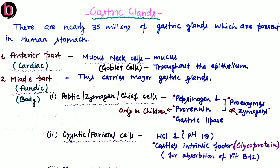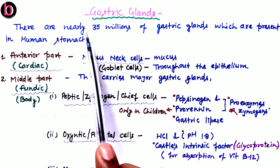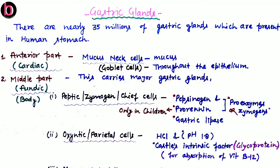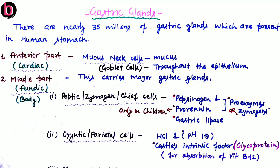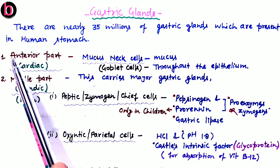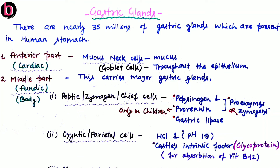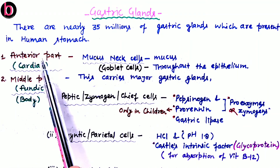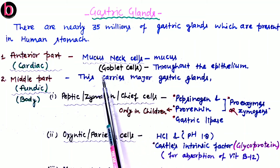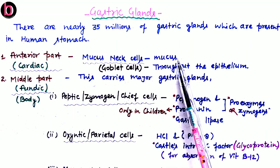For revision: gastric glands are present inside the stomach and there are nearly 35 million of them. The stomach can be divided into four parts: cardiac, fundic, body, and pyloric. The cardiac part is the anterior part of the stomach. The stomach is J-shaped, and in this anterior part there is presence of mucus neck cells, or goblet cells, which secrete mucus to protect the inner mucosal lining of the stomach, along with bicarbonates.